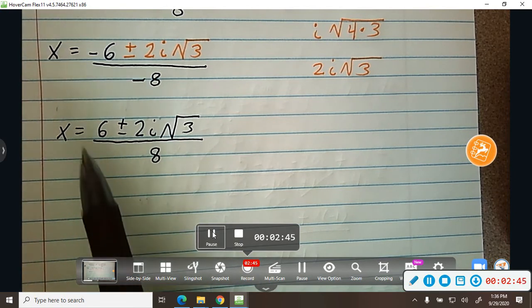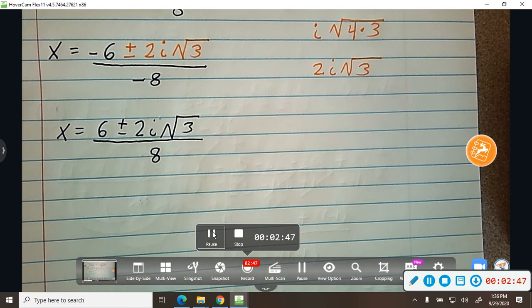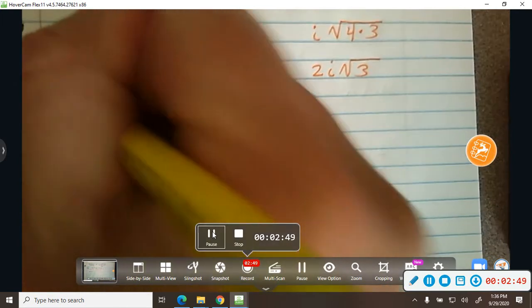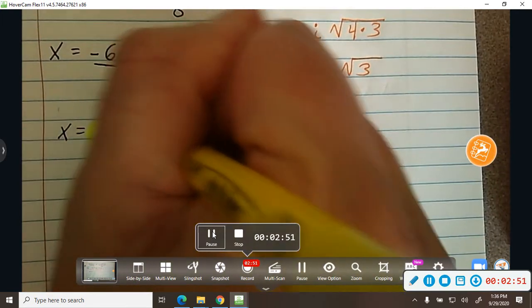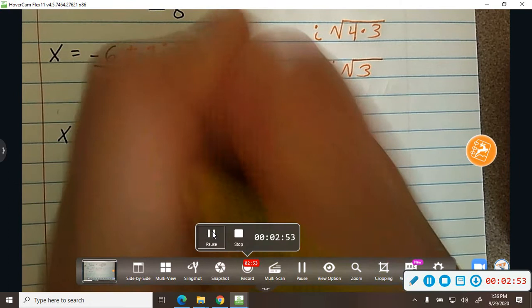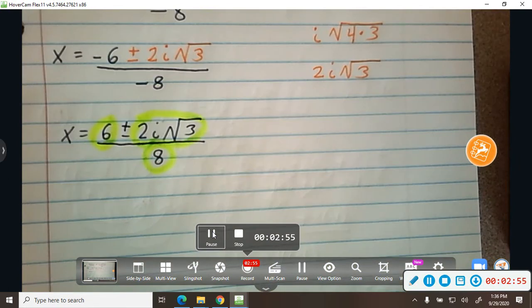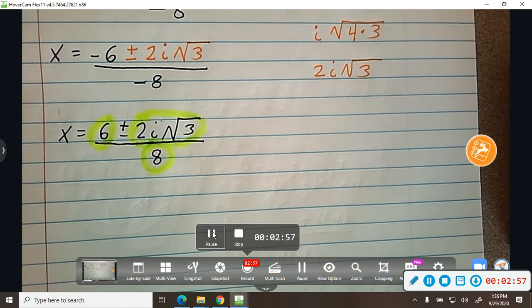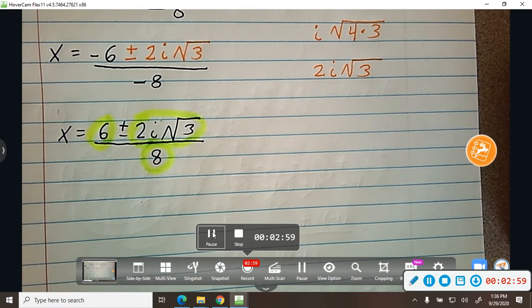And then also I have recognized that 6, 2, and 8 are all divisible by 2. So now I can divide them all by 2.